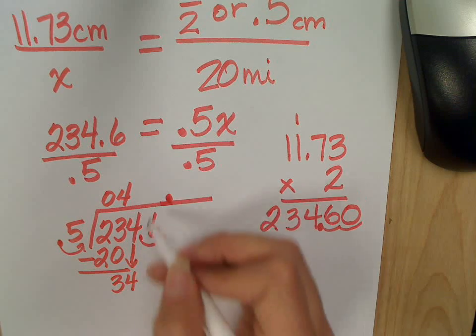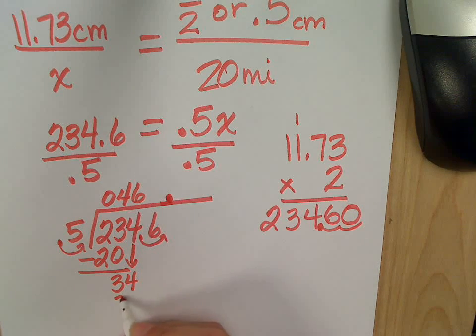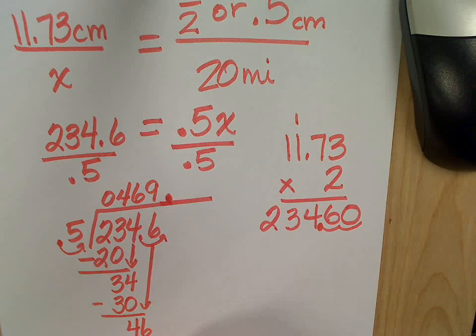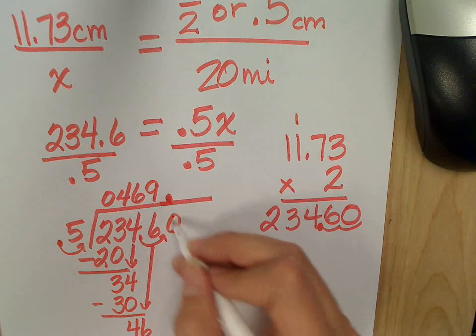5 into 34? 6. 6 times and that's? 30. Subtract to get 4. Bring down the 6. 5 into 46? 9 times. Which is? 45. Can I stop? No. Keep going until I have an answer.